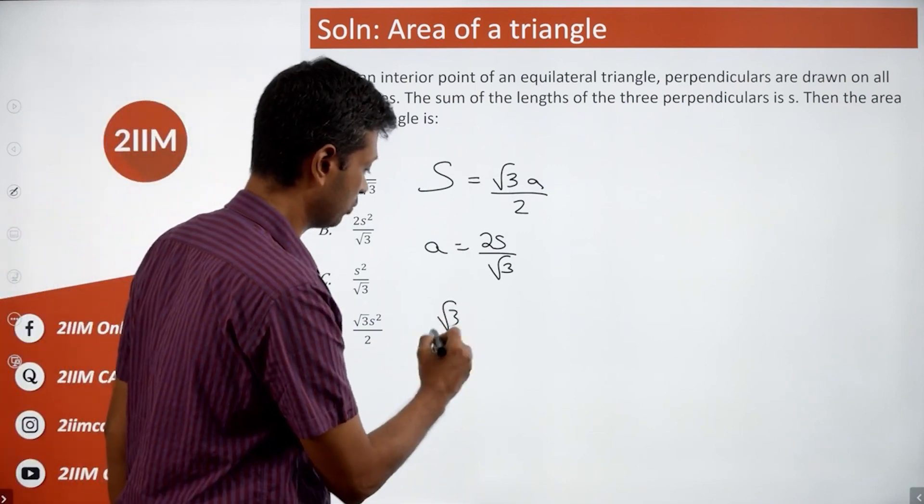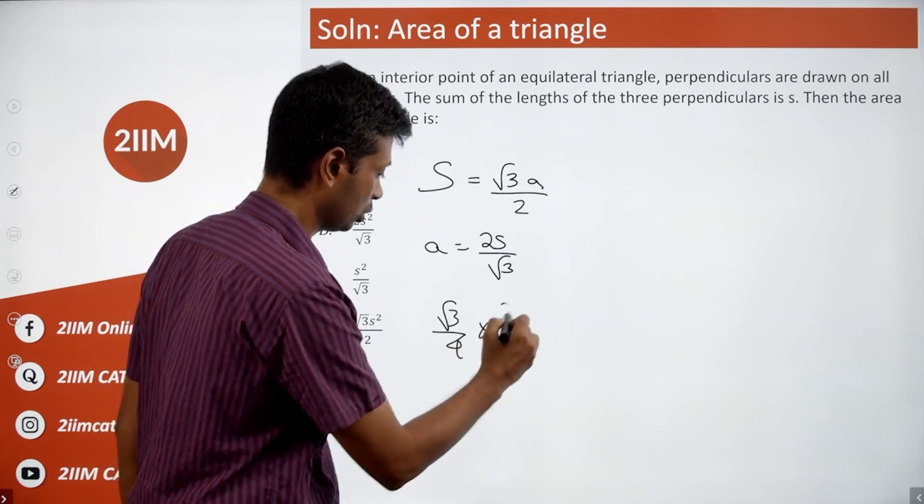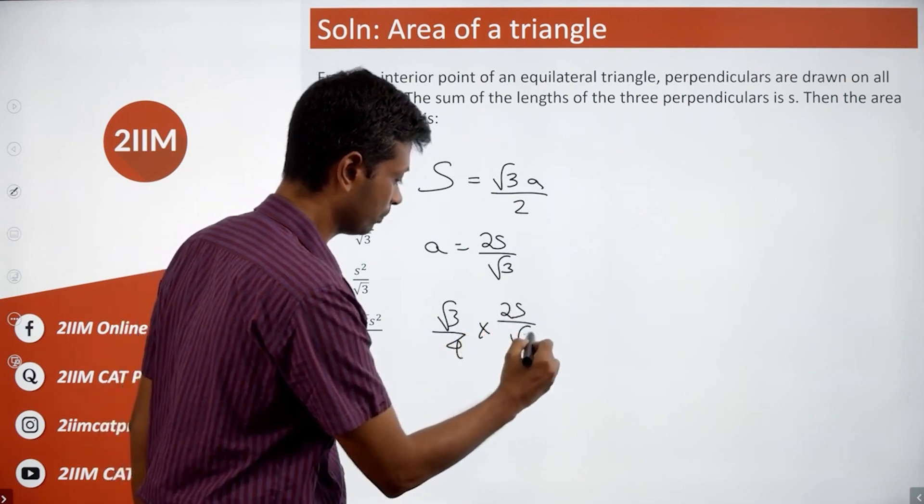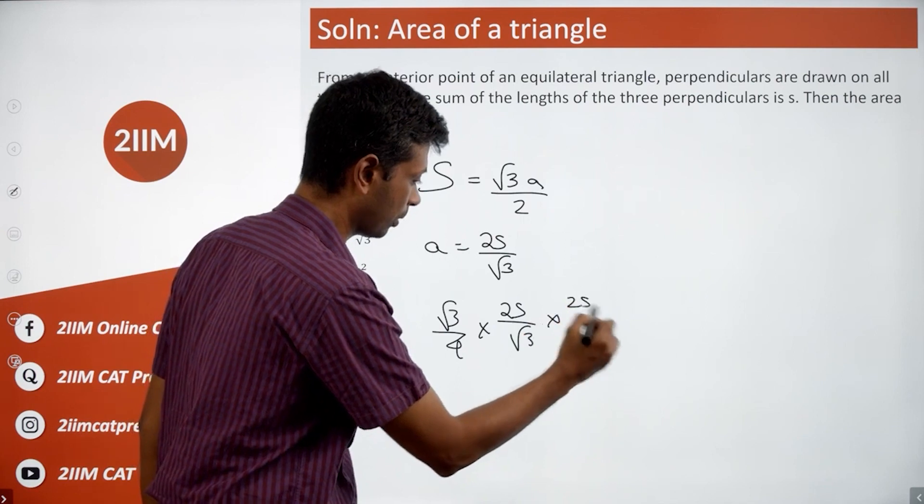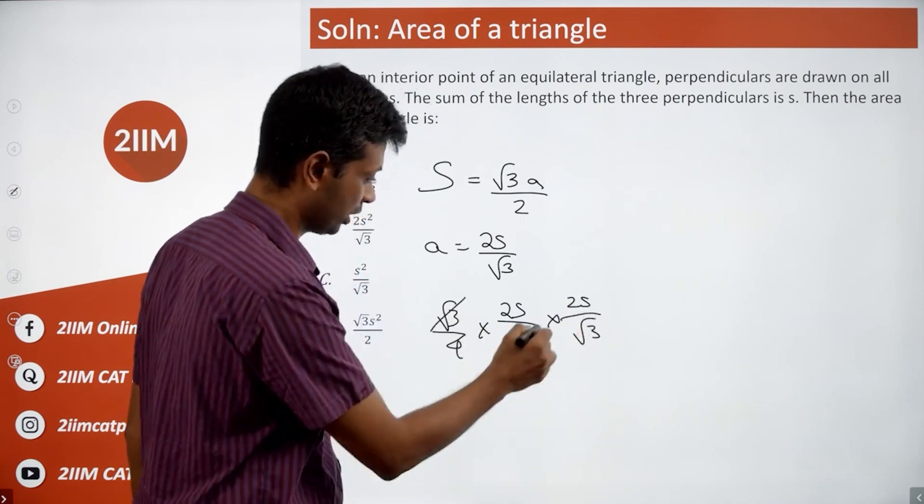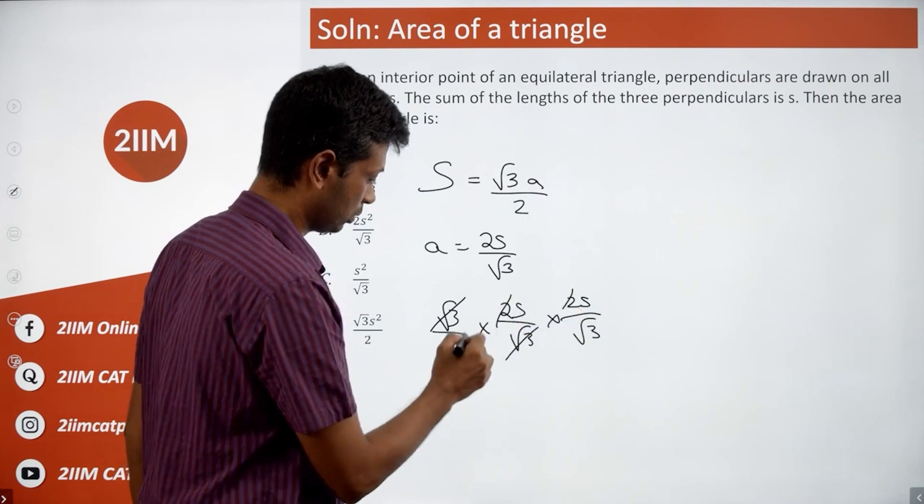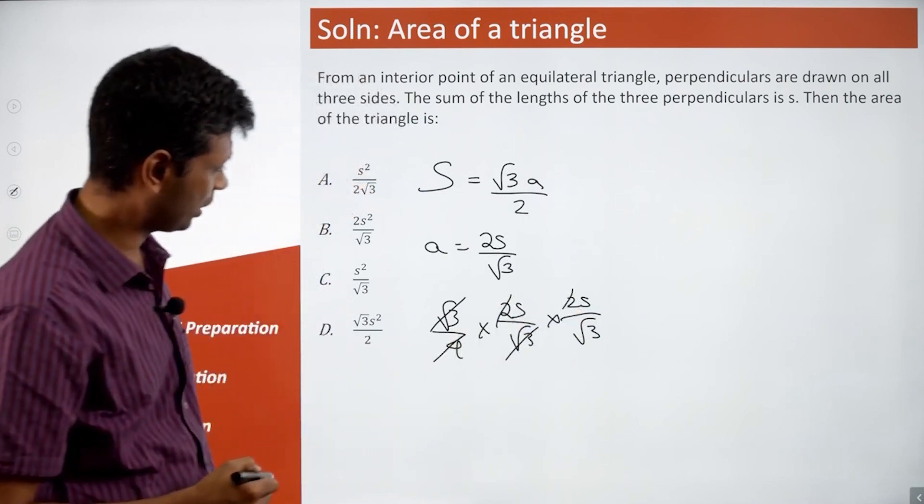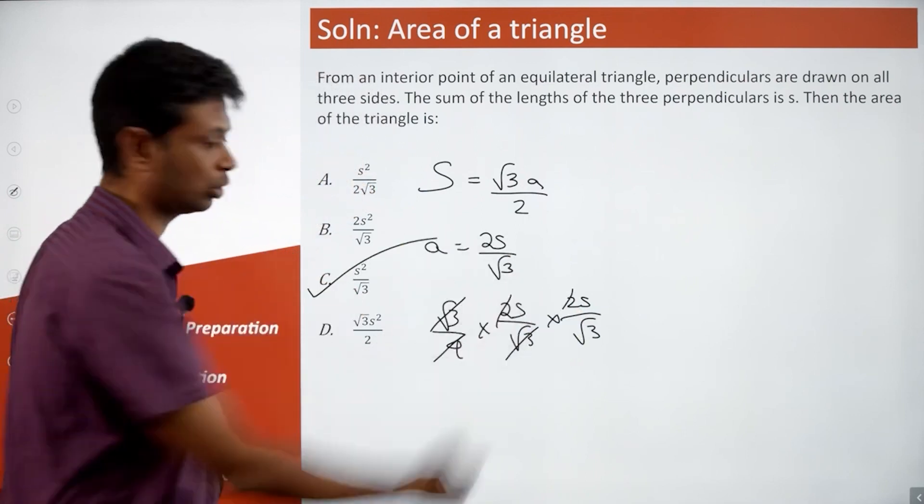Therefore, area is root three by four into two S by root three into two S by root three. One root three gets knocked off. Two into two is four S square by root three. Yeah, luckily we have that, good to go.